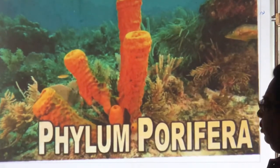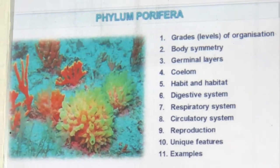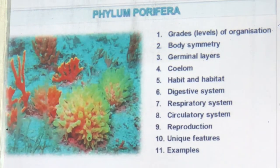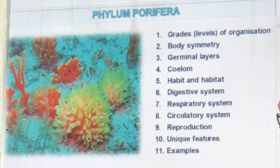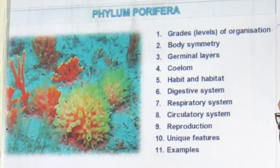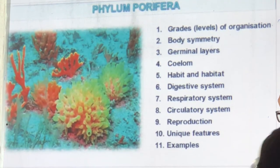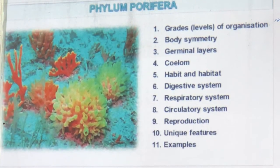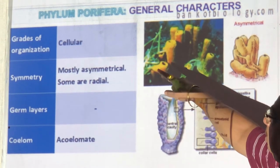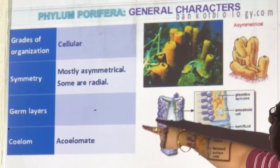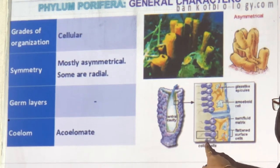Now let's study Phylum Porifera — sponges. They show cellular level of organization, are asymmetric or radial, have no germ layers, and are acoelomate. Their special cells are all present. In exams you must write: level of organization, body symmetry, germ layers, coelom, habit and habitat, digestive system, respiratory system, circulatory system, reproduction, and unique features with examples.